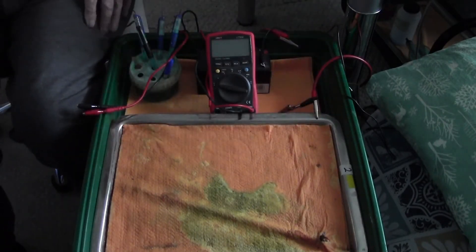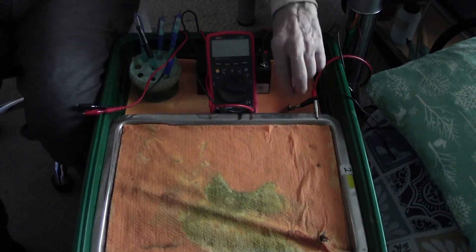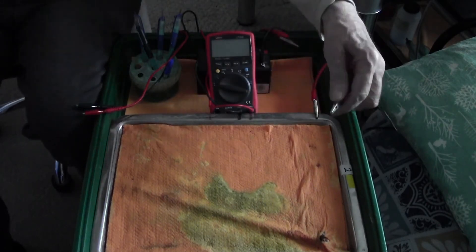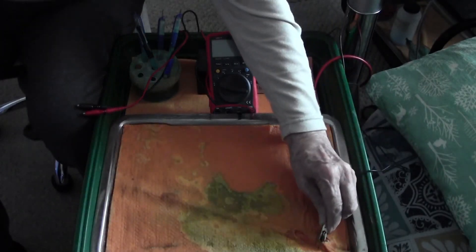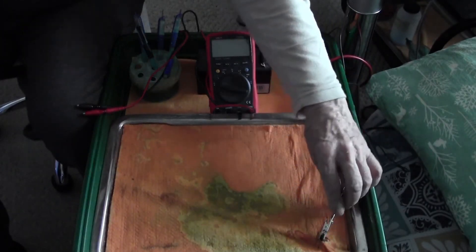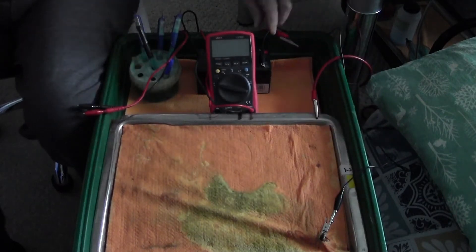And this will be connected to the pipe so this is the drain point and connected to the negative of the battery